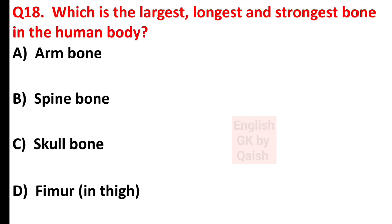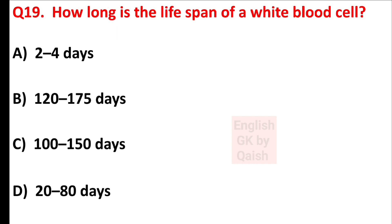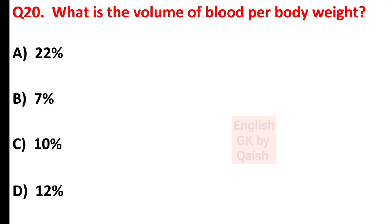Which is the largest, longest and strongest bone in the human body? Answer is option D — femur in the thigh. How long is the life span of a white blood cell? Answer is option A — 2 to 4 days. What is the volume of blood per body weight? Answer is option B — 7%.